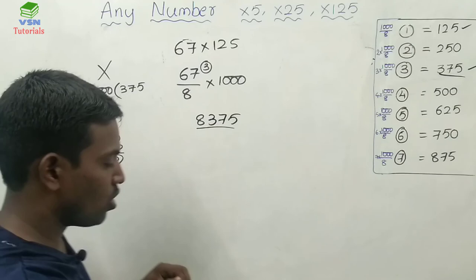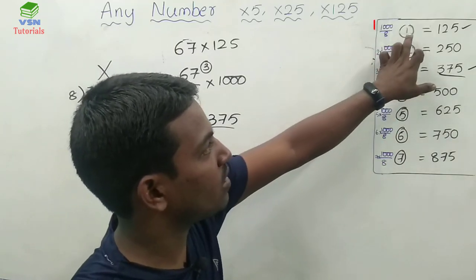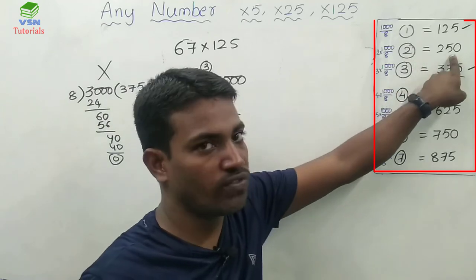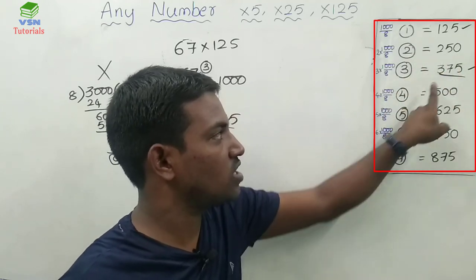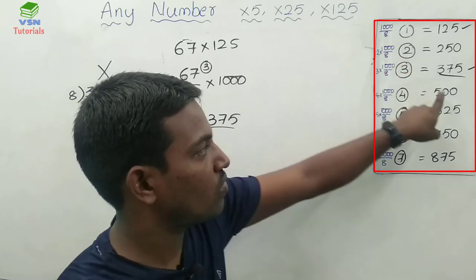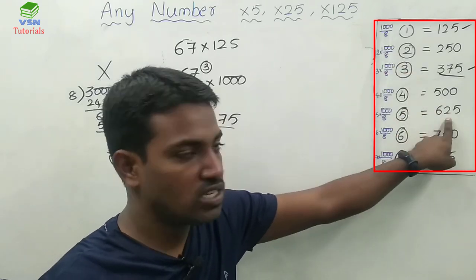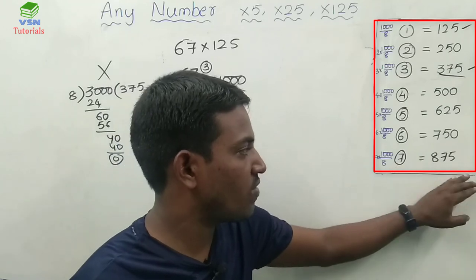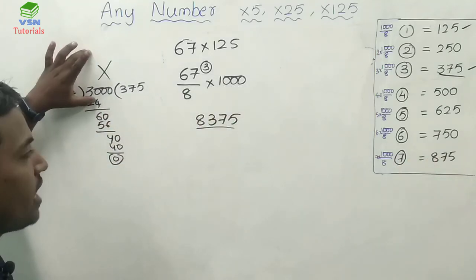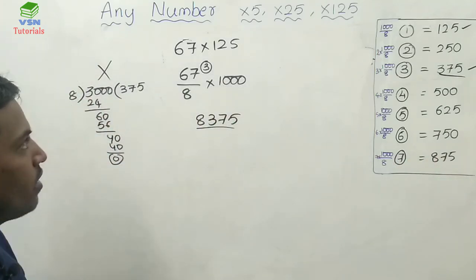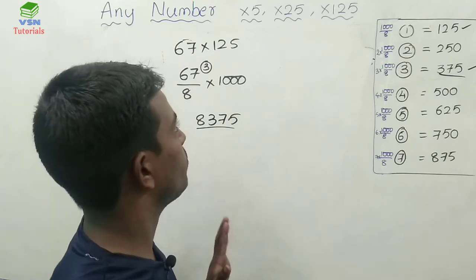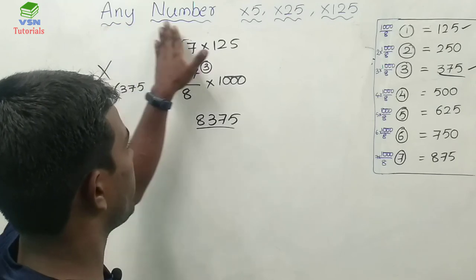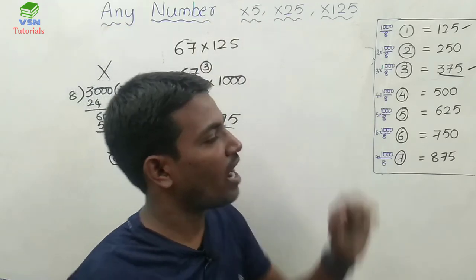If you remember these values, no need to do those calculations. The remainder table for multiplying by 125: remainder 1 → add 125; remainder 2 → add 250; remainder 3 → add 375; remainder 4 → add 500; remainder 5 → add 625; remainder 6 → add 750; remainder 7 → add 875. I hope you have understood these tricks for multiplying any number by 5, 25, and 125.